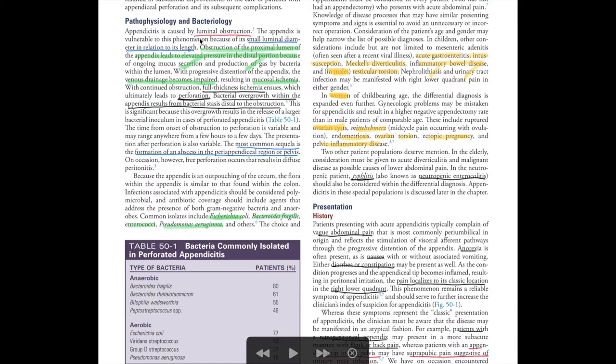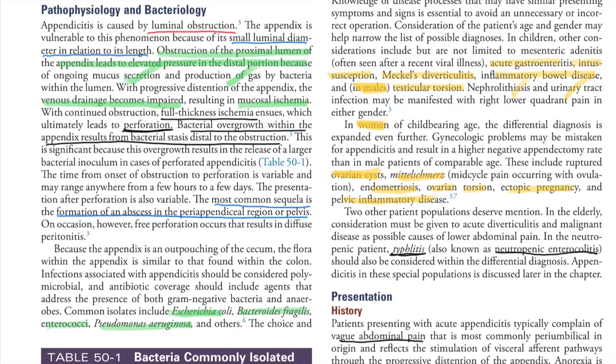Starting with the pathophysiology: appendicitis is caused by luminal obstruction. The appendix is very vulnerable because of its small luminal diameter in relation to its length. Obstruction of the proximal lumen leads to elevated pressure in the distal portion due to mucus secretion and gas production by bacteria, impairing venous drainage and resulting in mucosal ischemia.